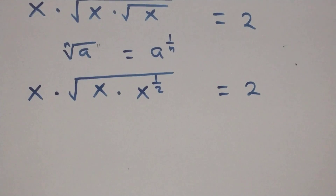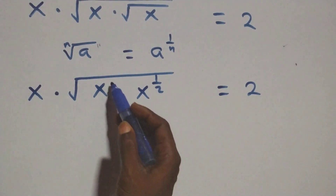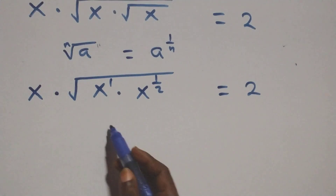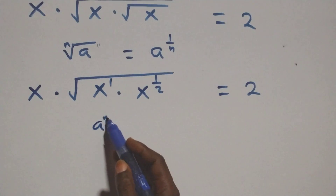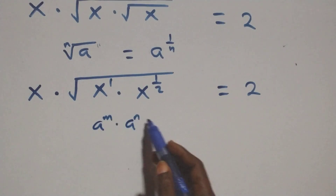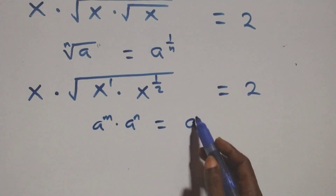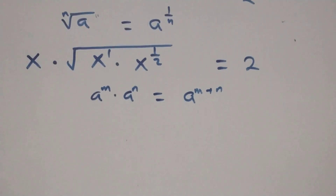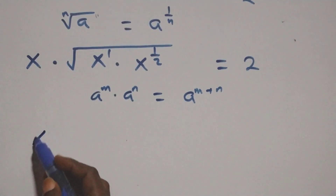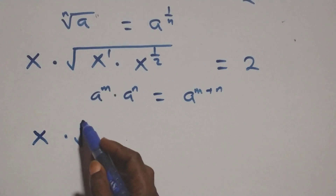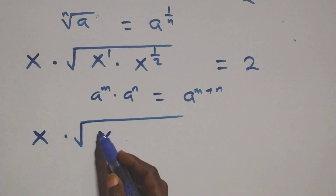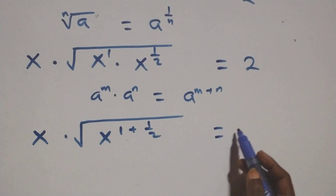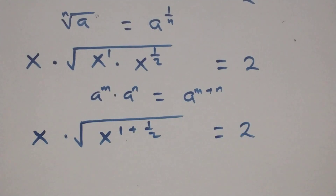From here, x raised to power 1. We can apply the law of indices: a raised to power n times a raised to power n is the same thing as a raised to power n plus n. So we have x times x raised to power 1 plus 1 over 2, then equals to 2.